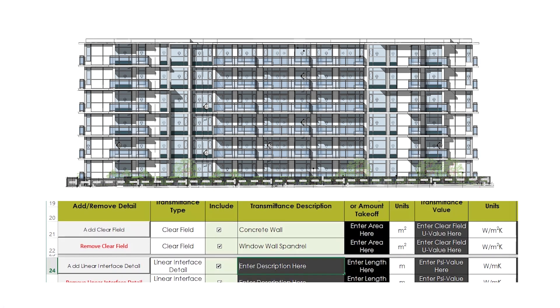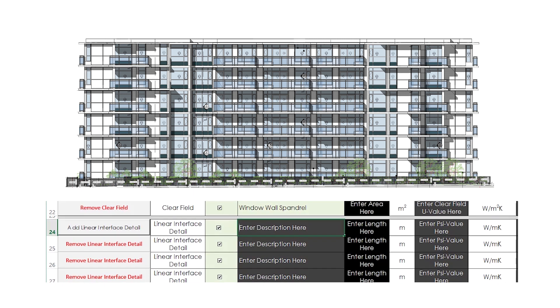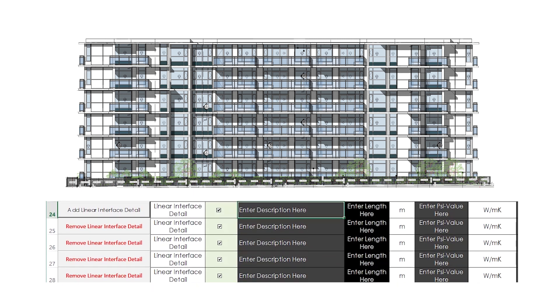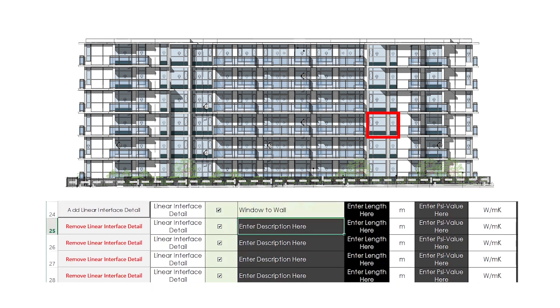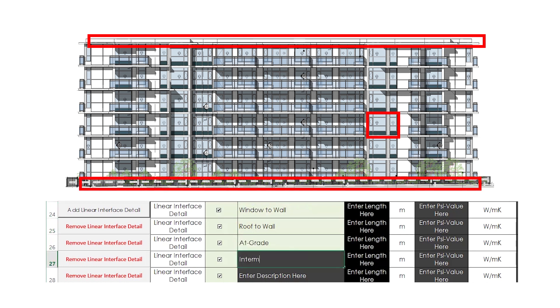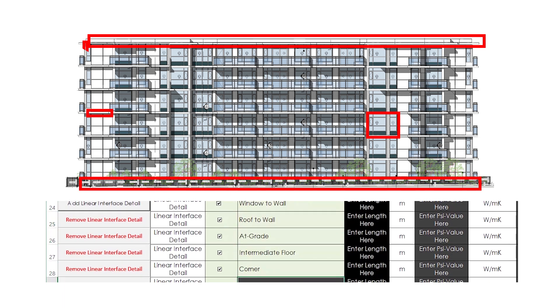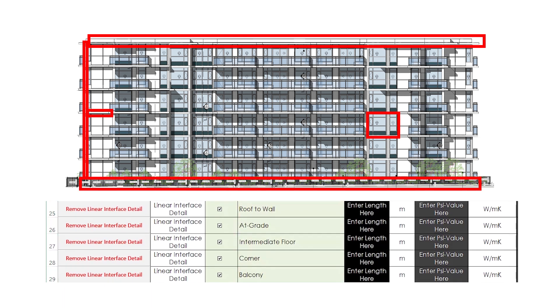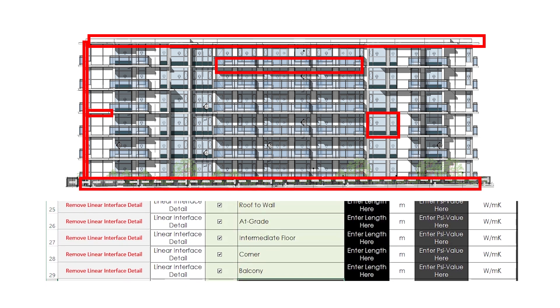The next step is to identify the interface details. Here, we identify the window-to-wall interface, roof-to-wall interface, at-grade interface, intermediate floor intersections, corners, and balconies.